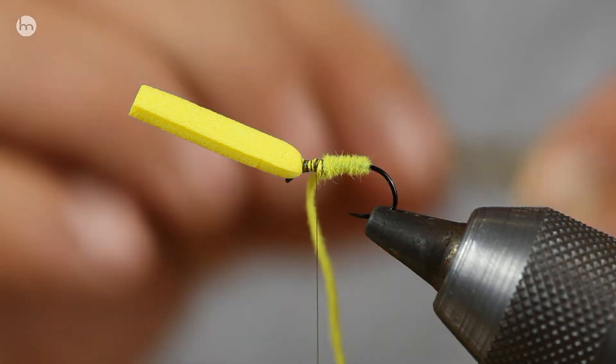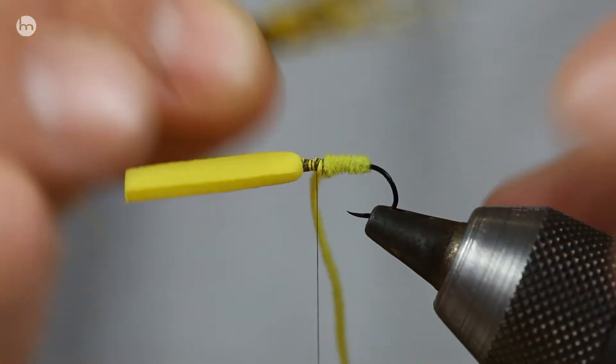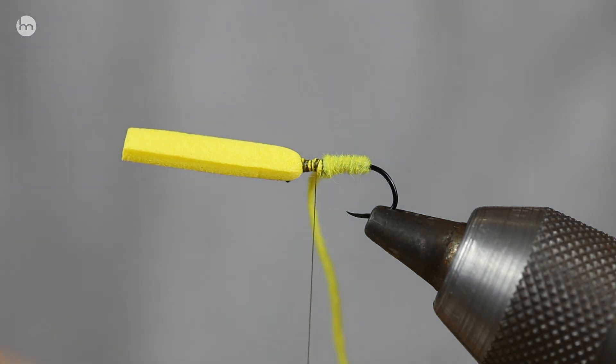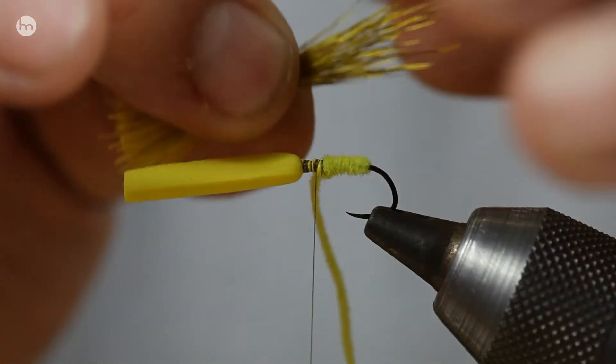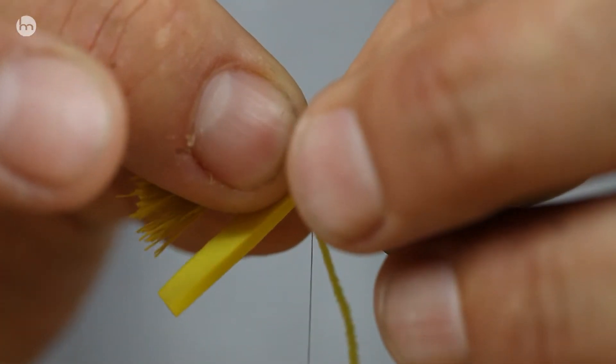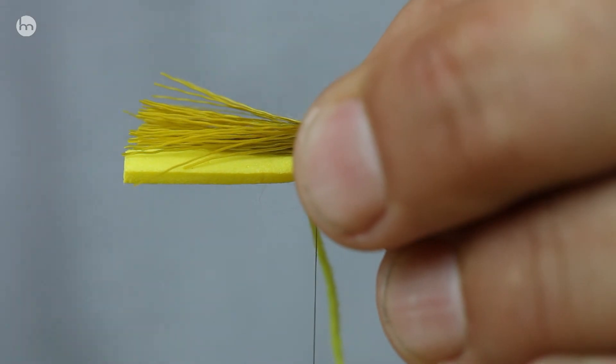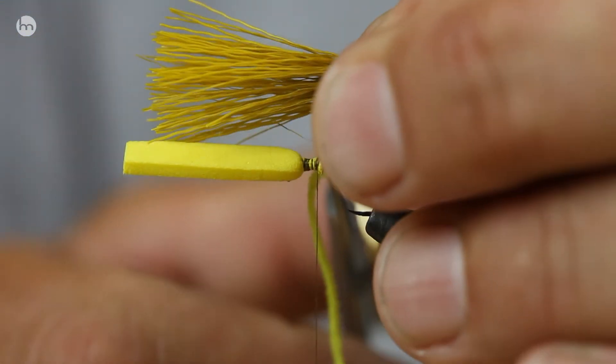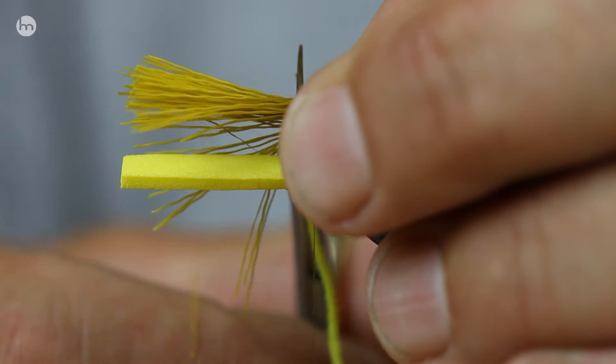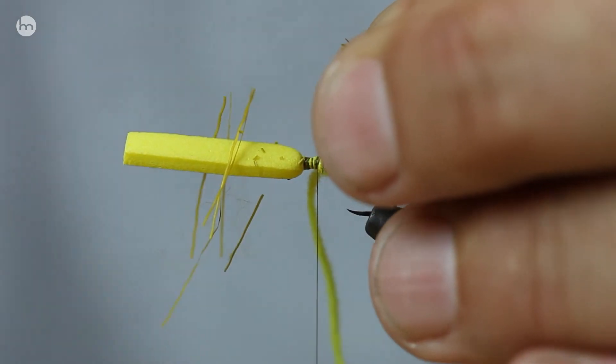So first of all, have a look how long you want the wing. Right. That's about the right length. And then I'm going to be tying it in there so we don't want any of this in the way at all. So we're going to cut all that out the way.